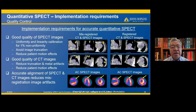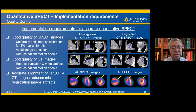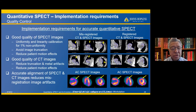The implementation of quantitative SPECT has important requirements, especially in quality control: good quality SPECT images, good quality CT images, and accurate alignment of the SPECT and CT images.